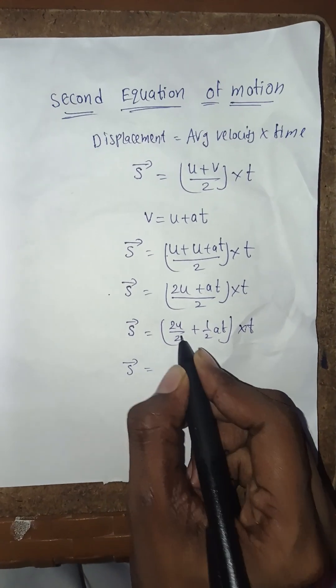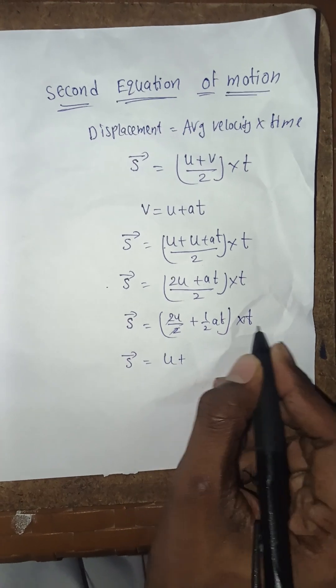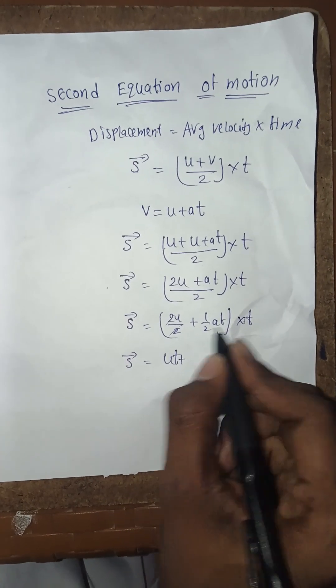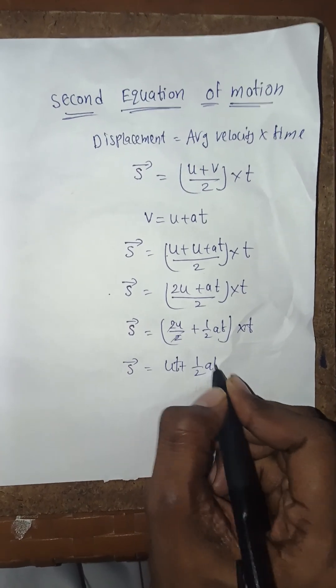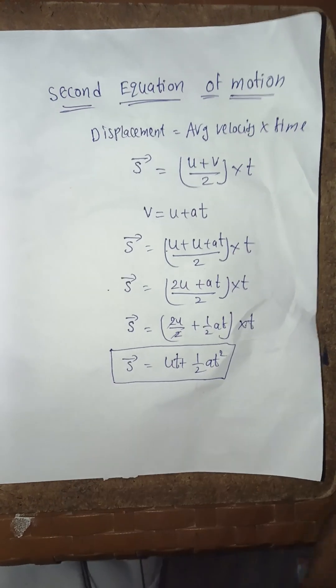Now 2 and 2 cancel out, so we get s = ut + (1/2)at². This is the second equation of motion.